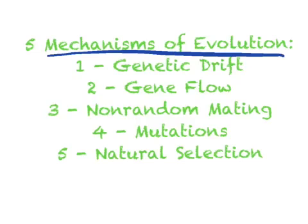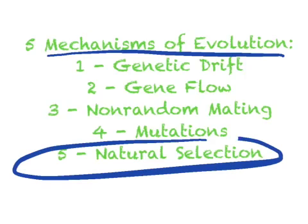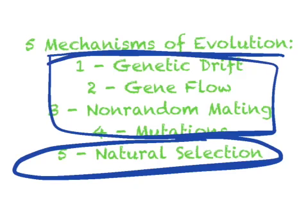The five mechanisms of evolution are genetic drift, gene flow, mutation, non-random mating, and natural selection. Of these, only natural selection is thought to provide adaptive advantages to a population, and only natural selection acts on an organism's phenotype. The rest are actually just due to complete chance, and we're going to see how those work today.